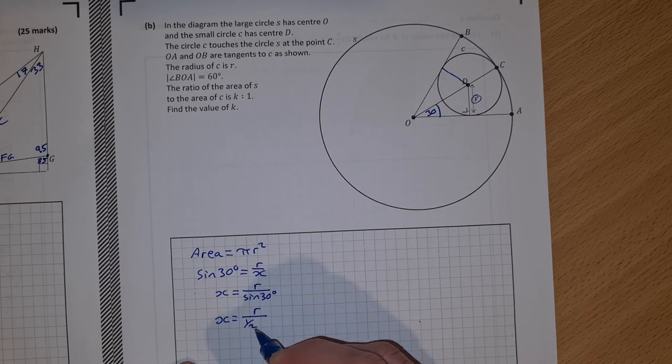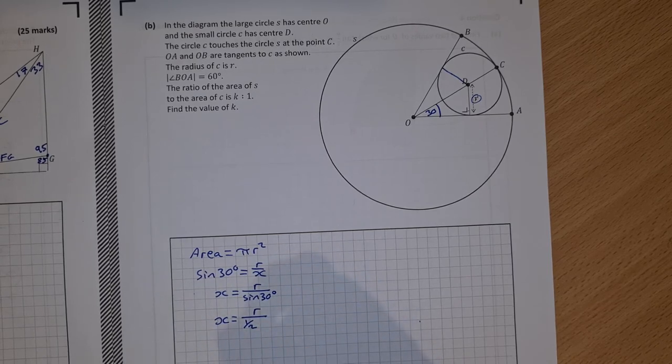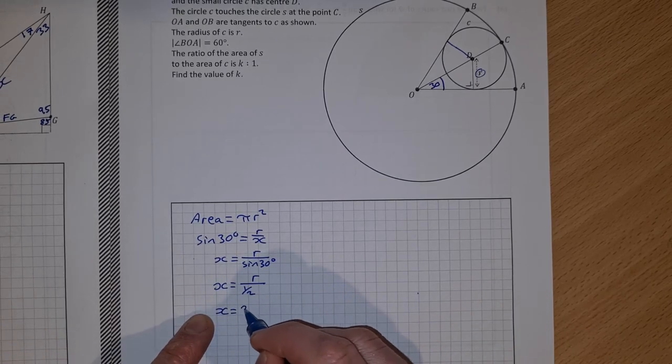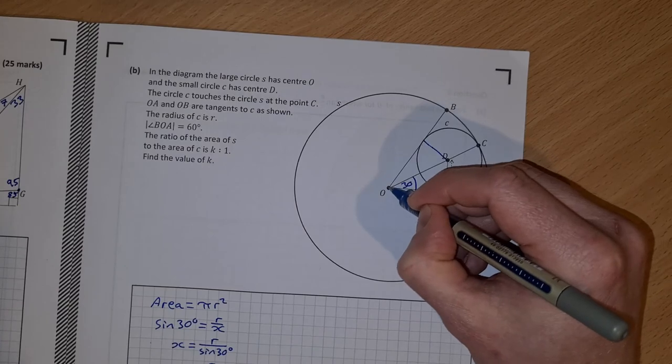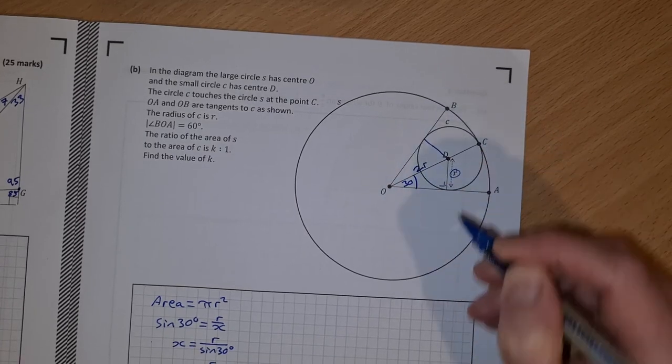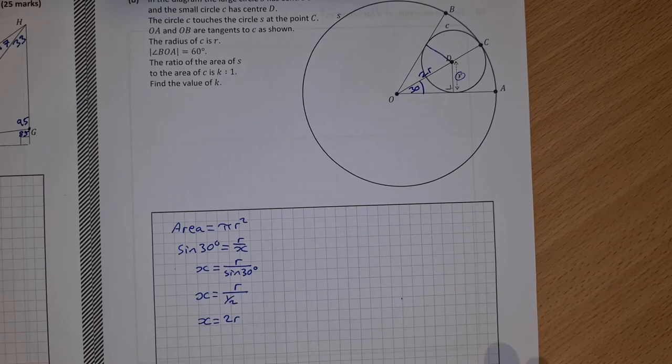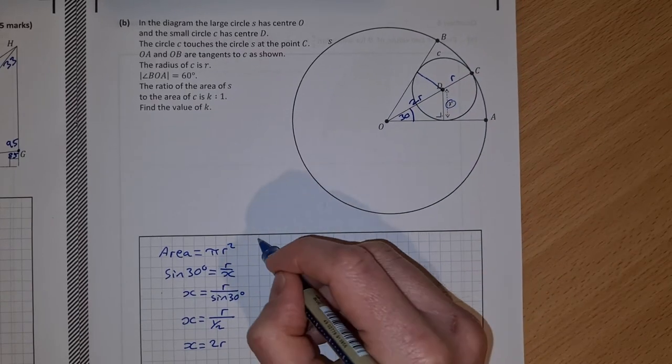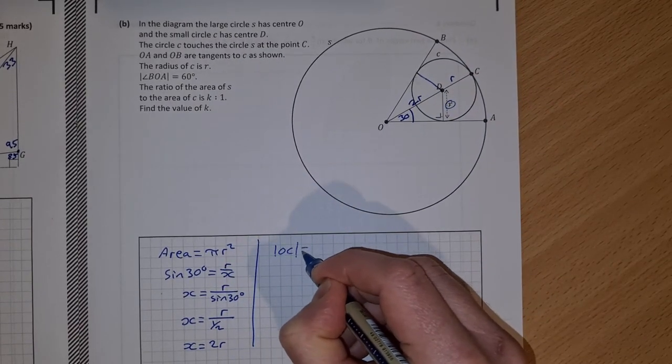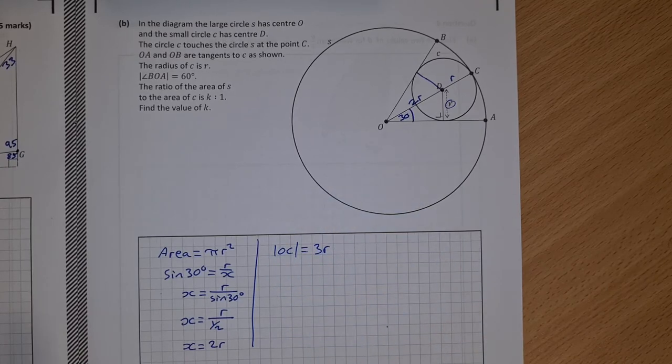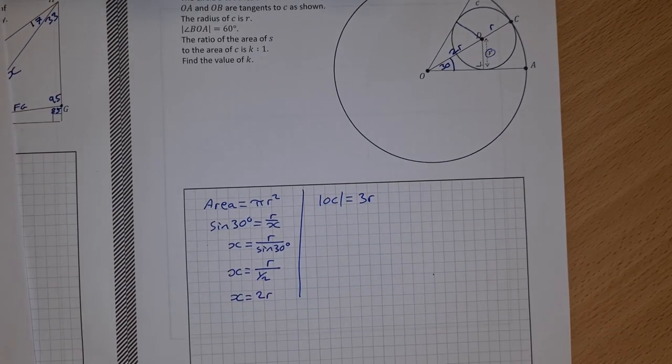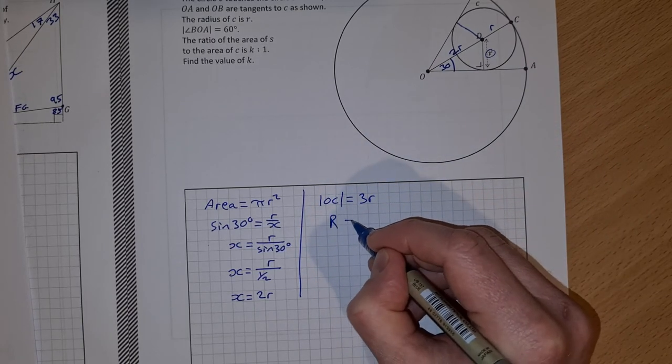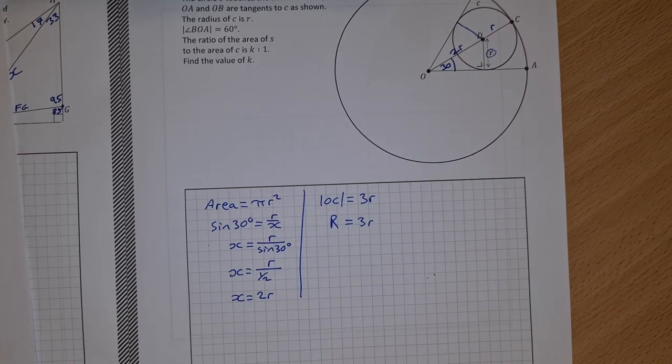So that means X is equal to 2r. So X is equal to 2r, so that means this distance here OD is 2r. Now if this is 2r and this is r, then OC is equal to 3r. So that is the radius of the big circle. So big radius is equal to 3 times the small radius.